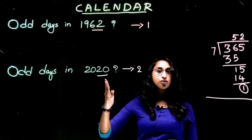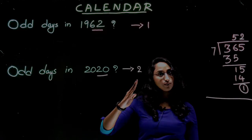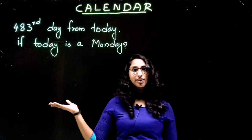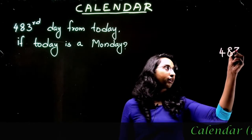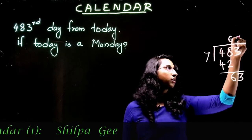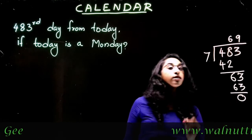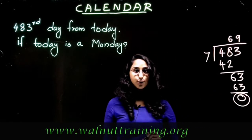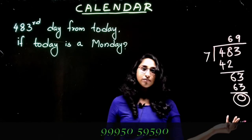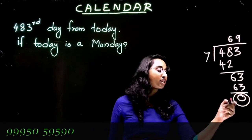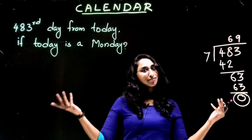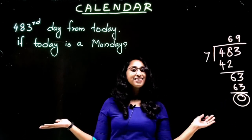Find the 483rd day from today if today is a Monday. Same method. 483 divided by 7: 69 and zero. In 483 days there is complete 69 weeks plus zero days. That means zero odd days. So Monday plus zero is Monday. The answer is Monday itself. That's it, and thanks for watching.